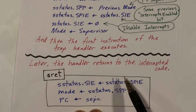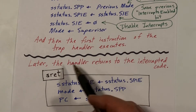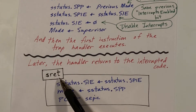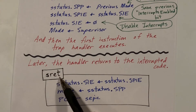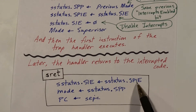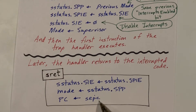The handler code will do many things, and at some point it will be ready to return to the interrupted code. For that, we use the RISC-V instruction called sret — return from supervisor mode. This restores the interrupts enabled bit from the saved copy, returns to whatever mode we were in previously, restores the program counter to whatever it was before, and we resume executing the interrupted code.